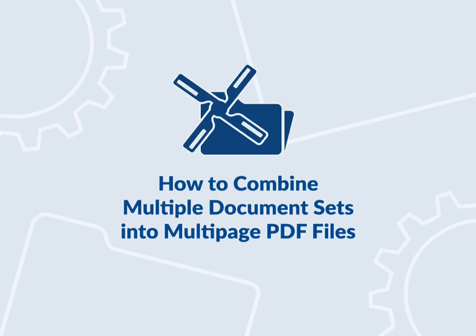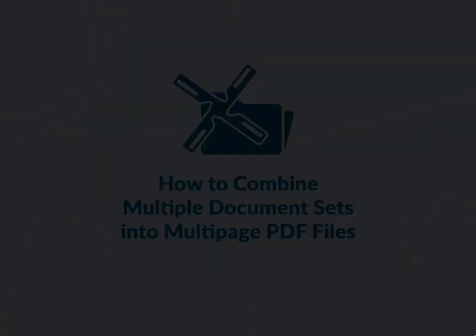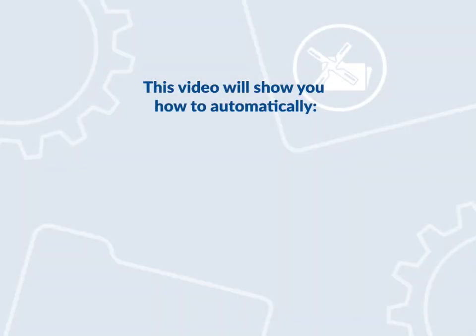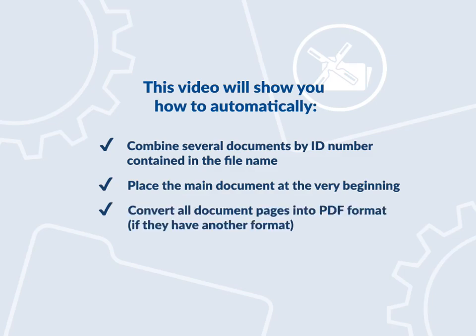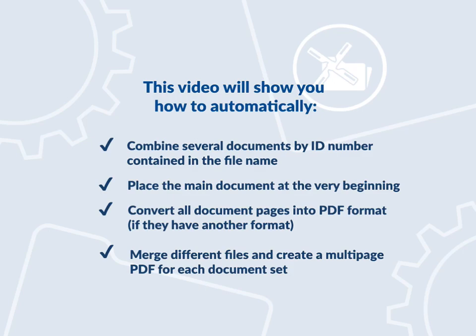This video will show you how to automatically combine several documents by ID number contained in the file name. Place the main document at the very beginning, convert all document pages into PDF format if they have another format, and merge different files to create a multi-page PDF for each document set.